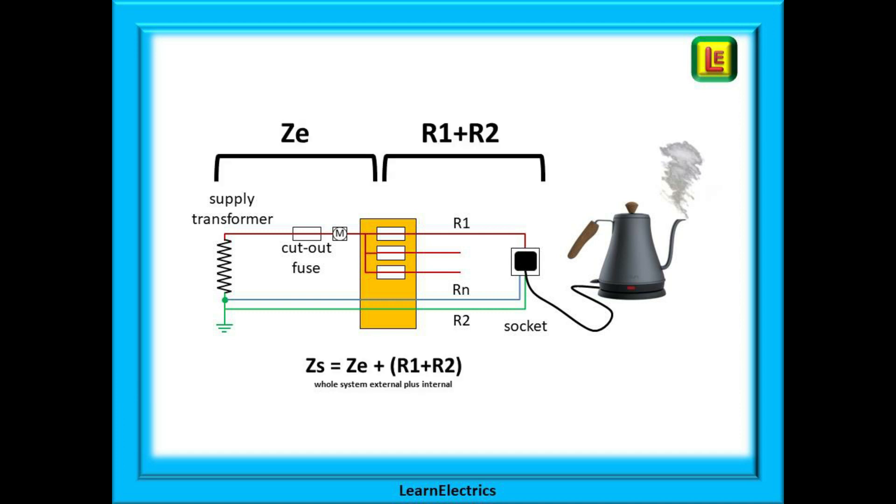ZS is the impedance or resistance of the whole installation, that is to say all of the outside wiring from the consumer unit back to the supply transformer and all of the inside wiring from the consumer unit to the point of use. It uses the formula shown here: ZS equals ZE plus R1 plus R2. And we have divided our drawing into two to show this. ZE is everything on the left before the consumer unit, and R1 plus R2 is everything on the right inside the building after the consumer unit.